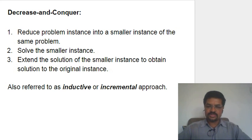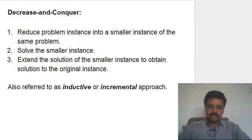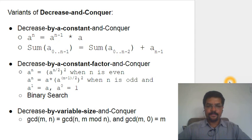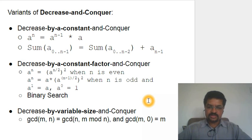In general, decrease and conquer reduces a problem instance to a smaller instance of the same problem, solves the smaller instance recursively, and when a base case is reached, stops and extends the solution to obtain the solution to the original instance. This is similar to mathematical induction, so it's also called the inductive or incremental approach. The variants are: decrease by a constant, decrease by a constant factor, and decrease by a variable size — such as finding GCD(m, n), where the decrease is neither constant nor a constant factor.